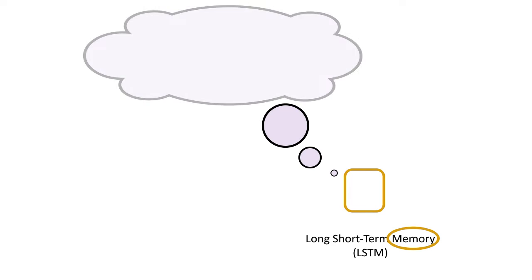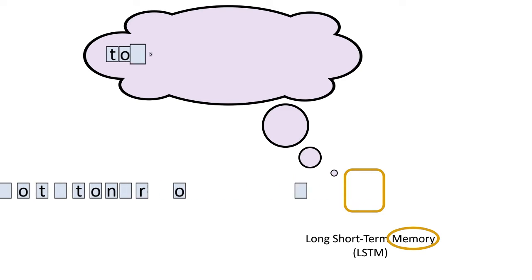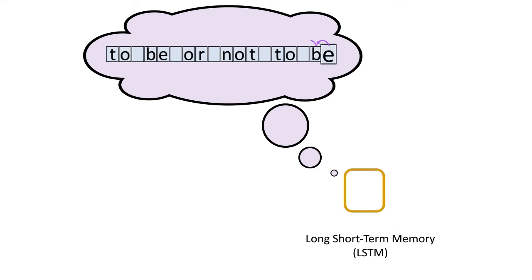Long short-term memory networks, or LSTMs, are designed for applications where the input is an ordered sequence, where information from earlier in the sequence may be important.